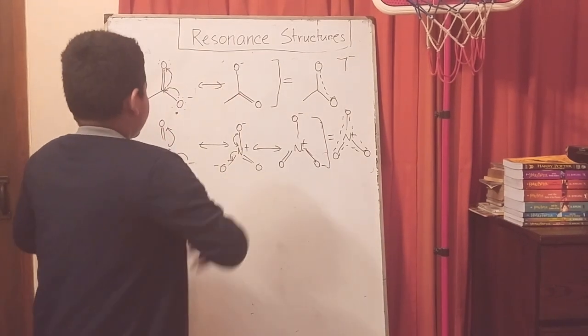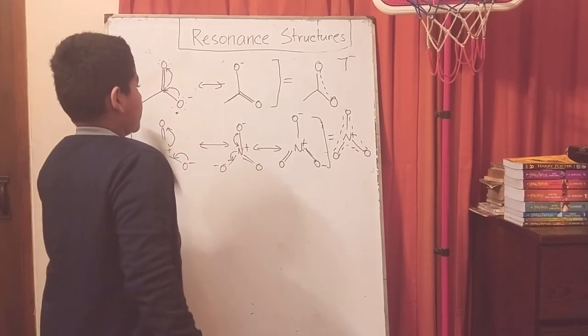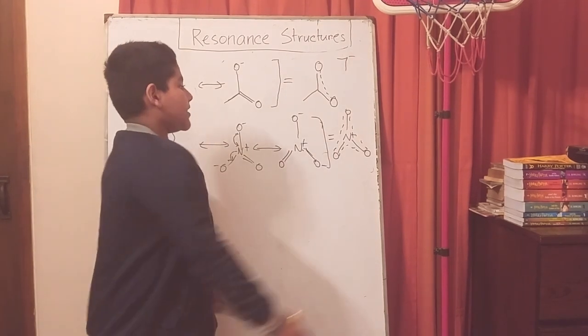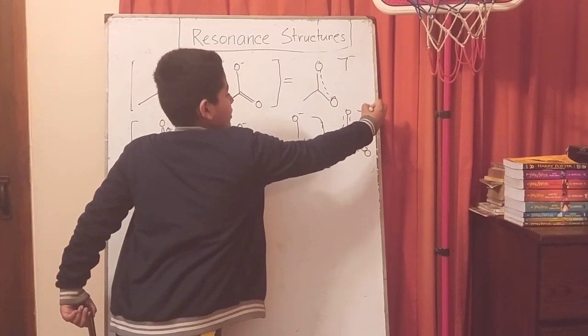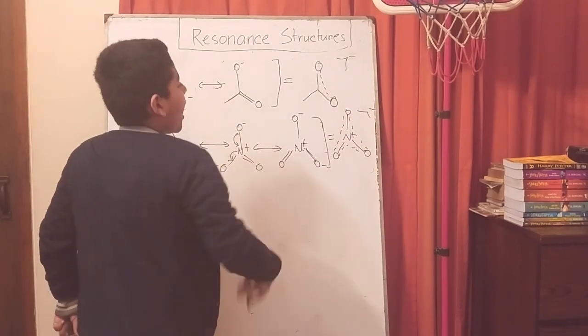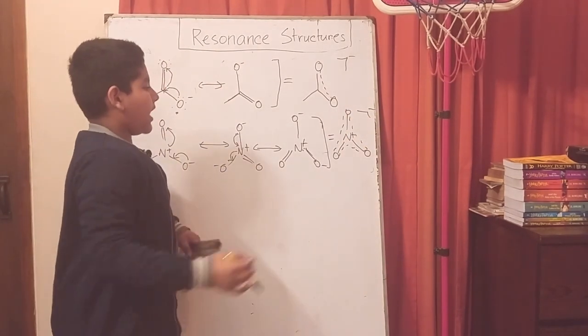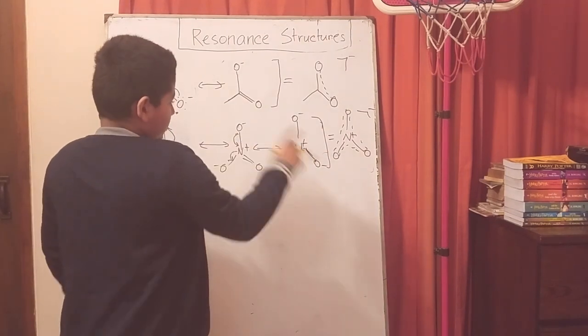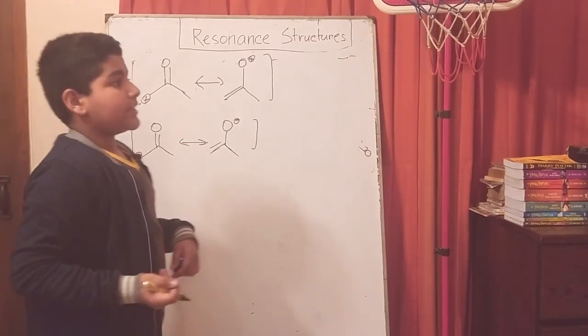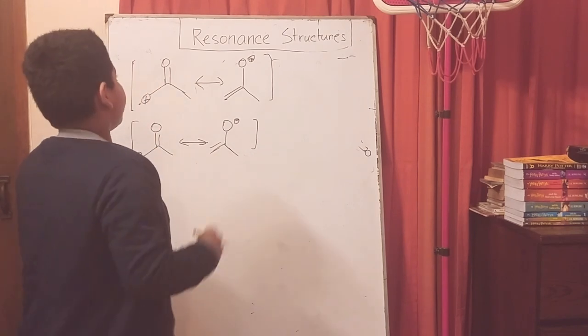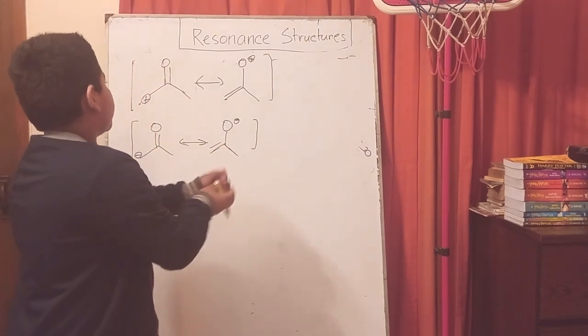Remember that the discrete resonance structures do not exist. What exists is a composite resonance structure distributing the partial pi density on that portion of the molecule.